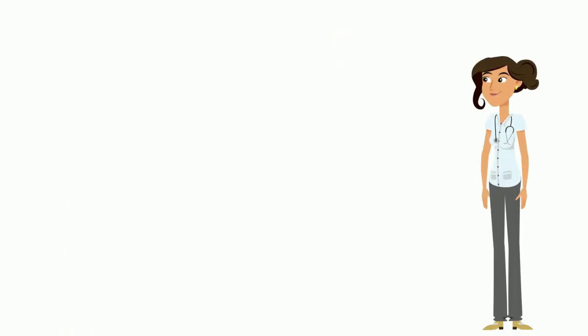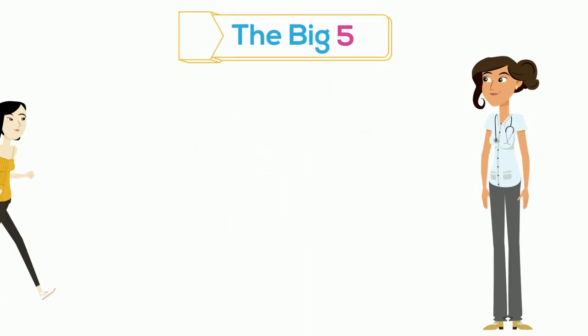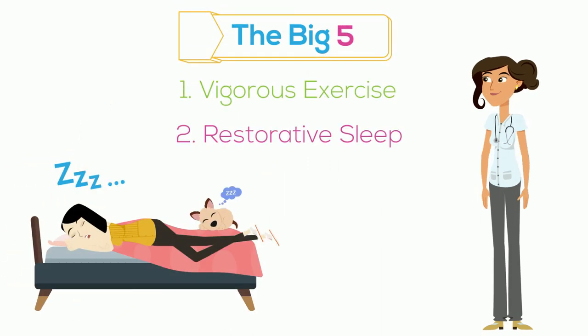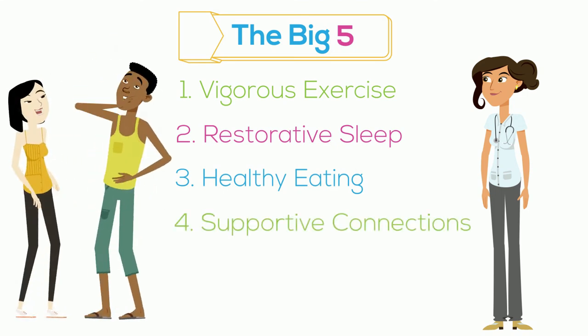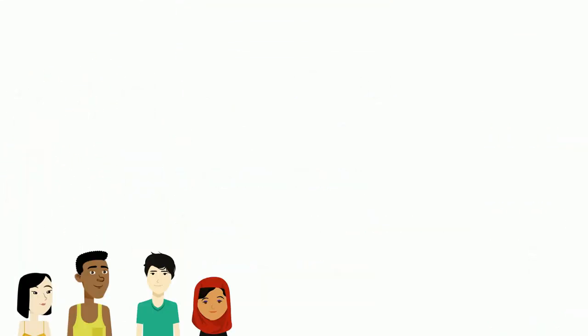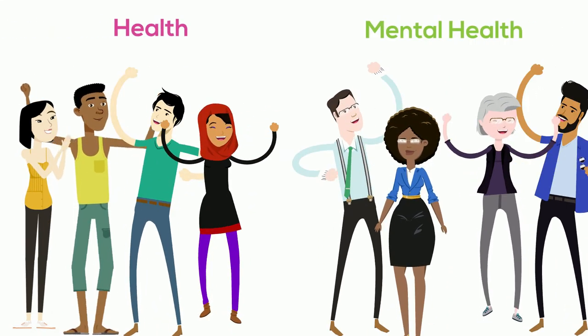Your health provider might recommend additional ways you can improve your mental health. They may mention the big five: vigorous exercise, restorative sleep, healthy eating, strong supportive social connections, and helping others. We want young people and their families to feel empowered when making decisions about their health and mental health care.